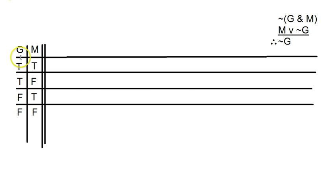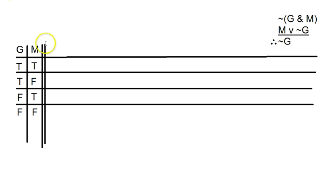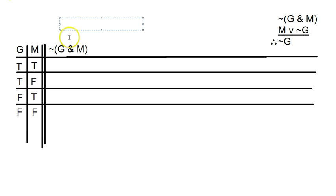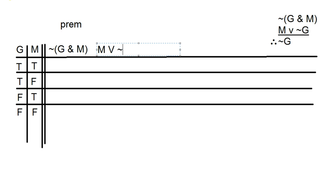This is step one: set up all your conditions by looking at all the different letters in the argument. Next, we make a different column for every single claim in the argument — all the premises and the conclusions. So we've got NOT G and M — that's one claim, and I like to mark it as a premise up top. That'll be important later.